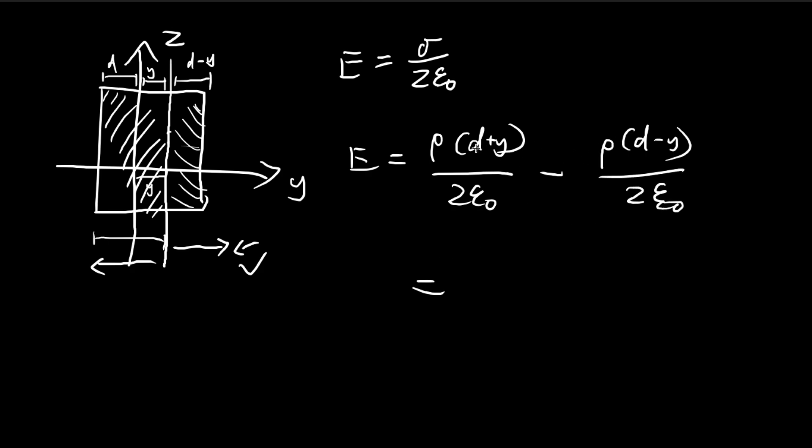So quite obviously, the ds cancel out. So you get 2y rho over 2 epsilon. So you get y rho over epsilon. So the 2s cancel out. So this is our answer.